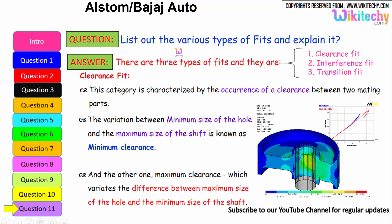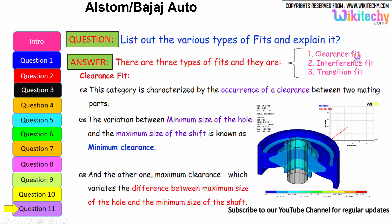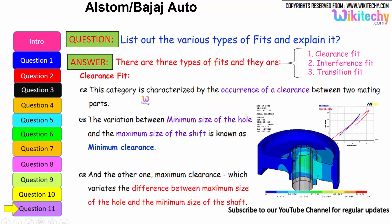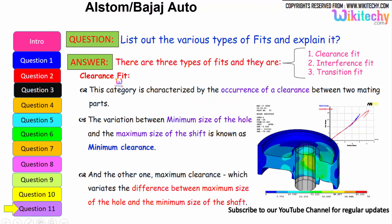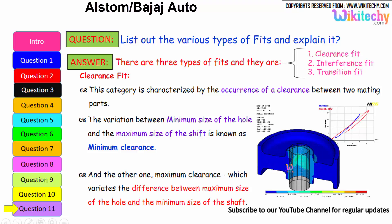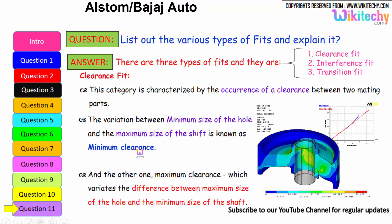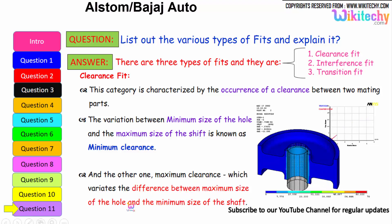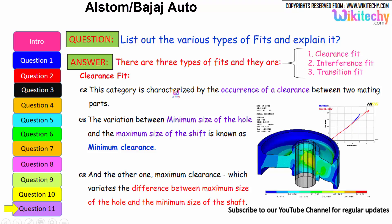Let us see the final question: list the various types of fits and explain them. There are three types of fits: clearance fit, interference fit, and transition fit. A clearance fit is characterized by the occurrence of clearance between two mating parts. The minimum clearance is the difference between the minimum size of the hole and the maximum size of the shaft, while maximum clearance is the difference between the maximum size of the hole and the minimum size of the shaft.